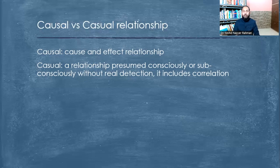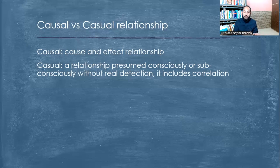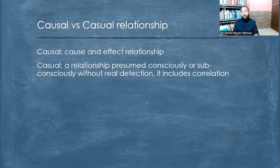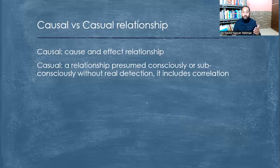In social sciences, because things are not visible and because there is erratic human behavior, it is difficult to determine cause and effect relationship. But without an understanding of cause and effect relationship, we cannot have policies that will have the intended impact on people. Therefore, it is always important to search for causal relationship. A casual relationship may have some kind of correlation, but correlation cannot be converted into cause and effect relationship.